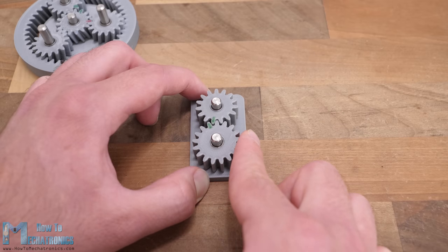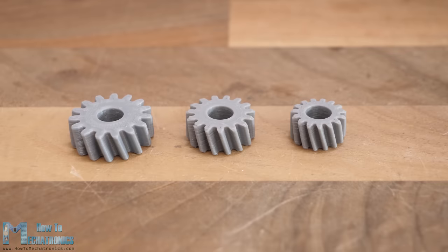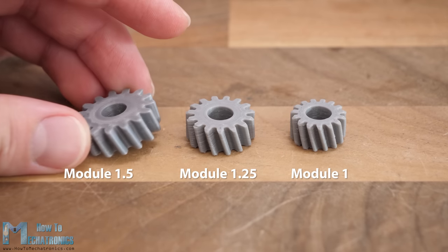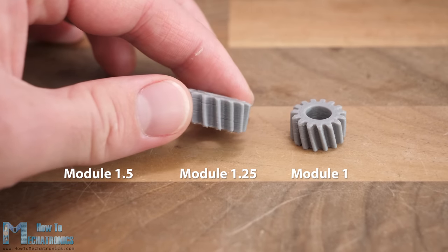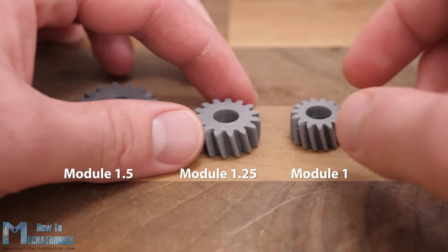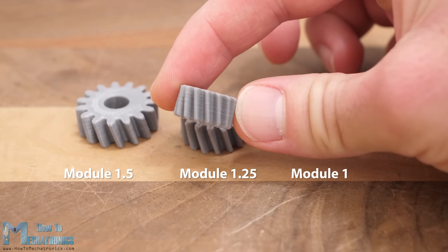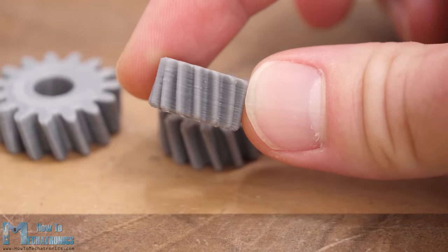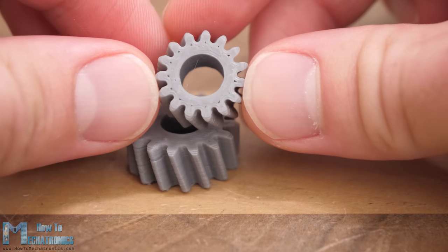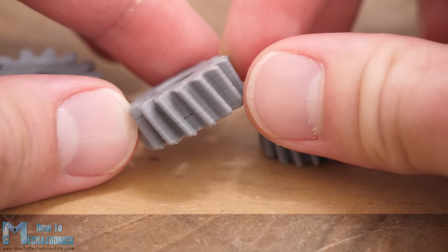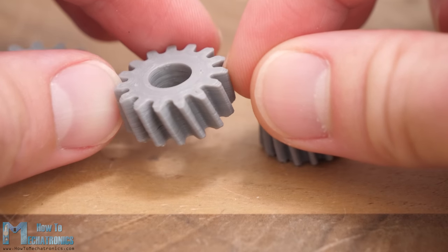One more thing to talk about the design of the gearbox before moving to 3D printing and assembling it is the module of the gears. The module of a gear defines the size of the gear. As I wanted the gearbox to be as small as possible, I had to choose a module as small as possible. I chose a module of 1.5 because if it's lower than that, the 3D printer might not be able to print a good enough tooth profile, so we might lose efficiency.